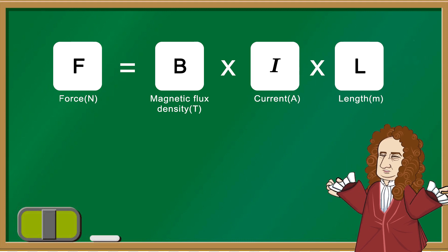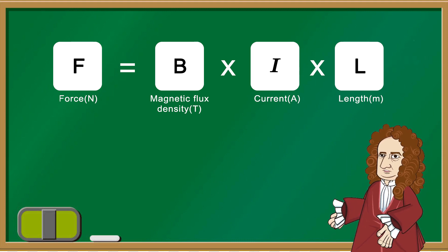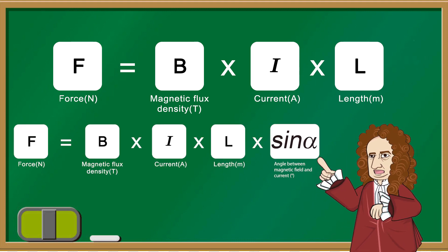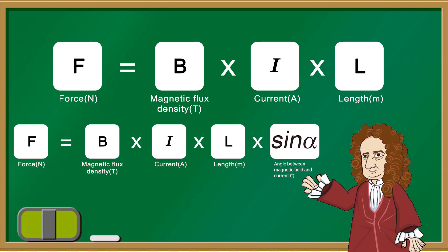If the magnetic field and current are not mutually perpendicular, then the equation looks like this, where sine alpha is the angle between the magnetic field and current.